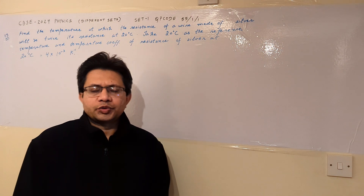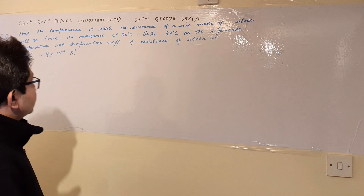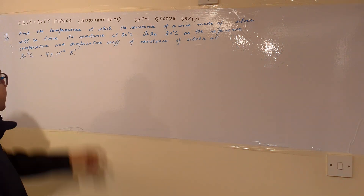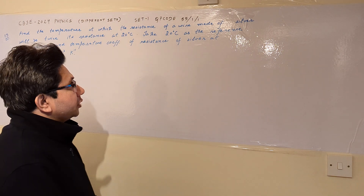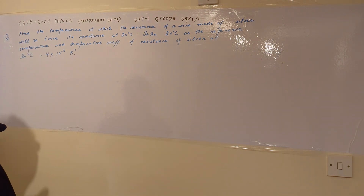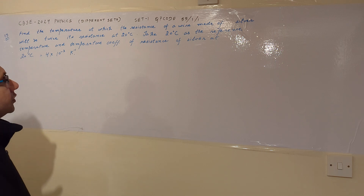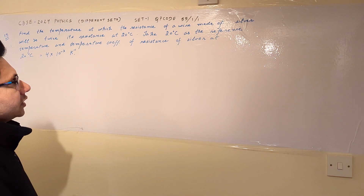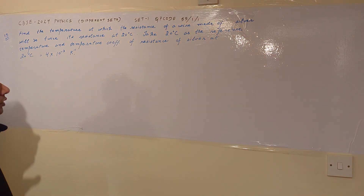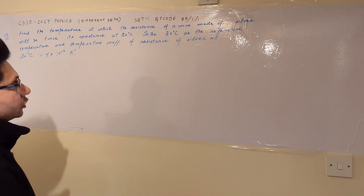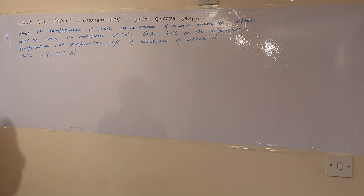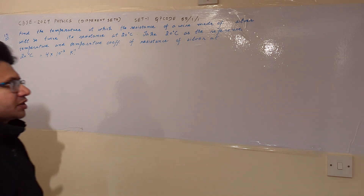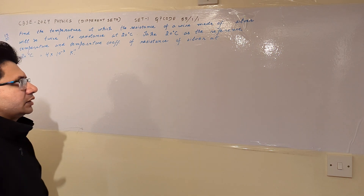Hello students, hope you are doing well. The question is: find the temperature at which the resistance of a wire made of silver will be twice its resistance at 20 degrees Celsius. Take 20 degrees Celsius as the reference temperature, and the temperature coefficient of resistance of silver at 20 degrees Celsius is equal to 4 into 10 to the power minus 3 per Kelvin.